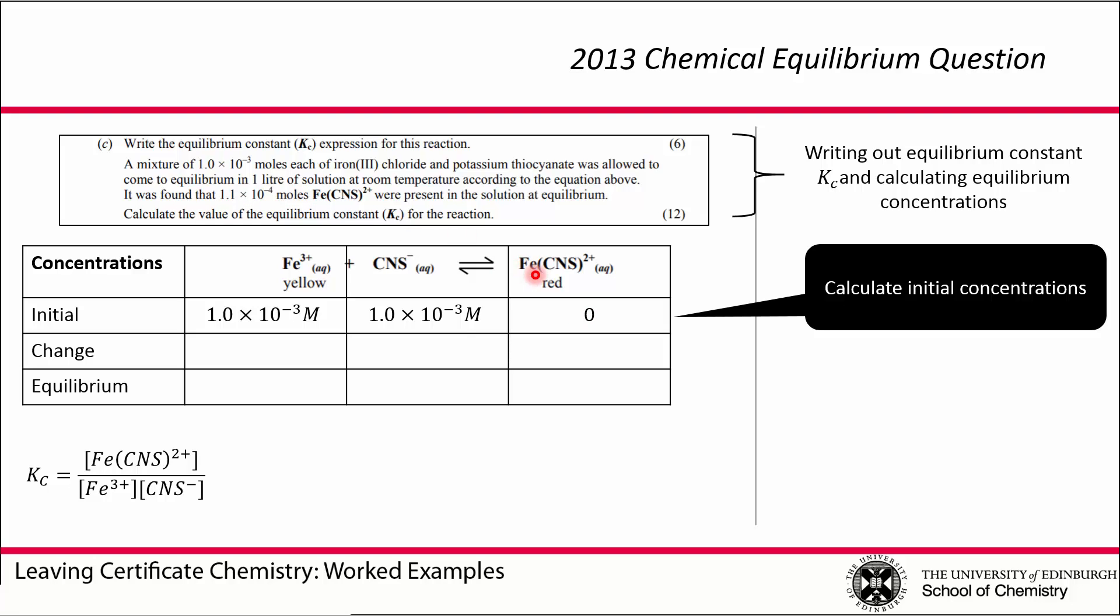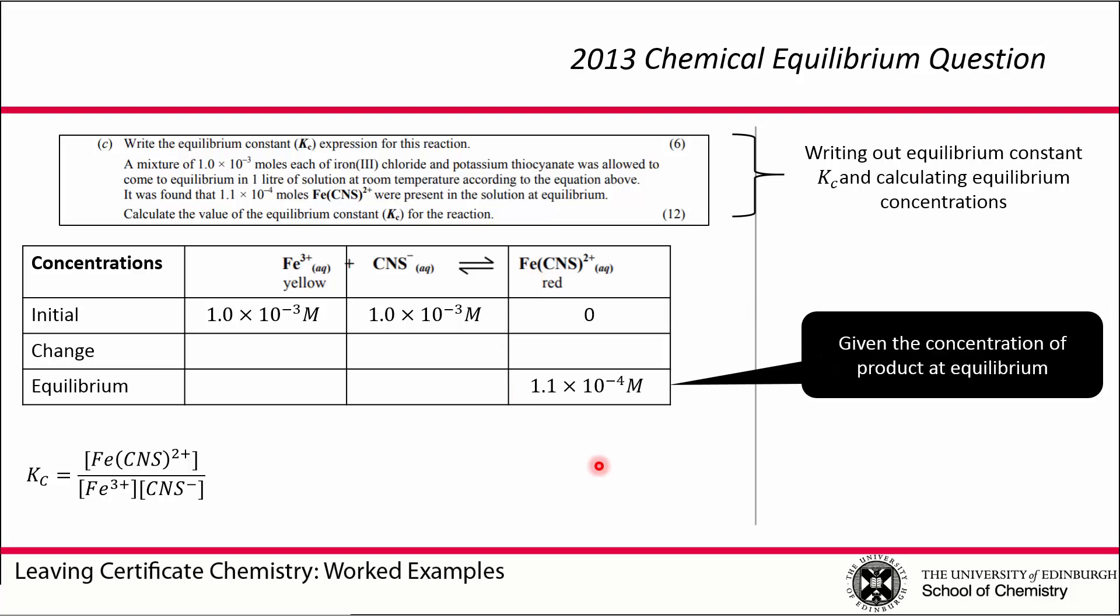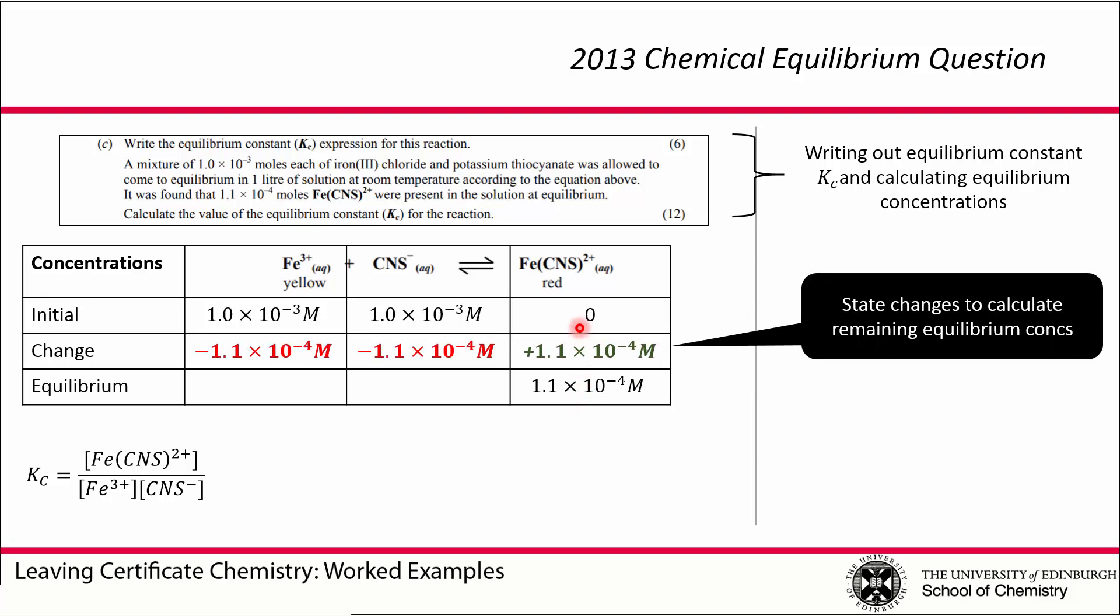We're told the concentration of product at equilibrium. After the reaction starts and reaches equilibrium, the concentration of product at equilibrium is 1.1 × 10^-4 molar. That means the concentration of our product increased from zero to 1.1 × 10^-4 molar, so it increased by this amount. If our product increased by this amount, that means our reactants must have decreased both by the same amount, because it's a 1 to 1 molar ratio.